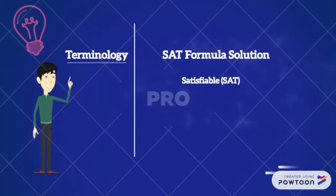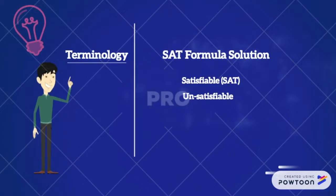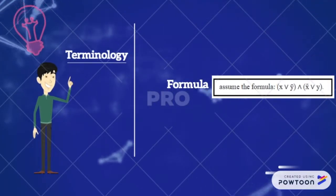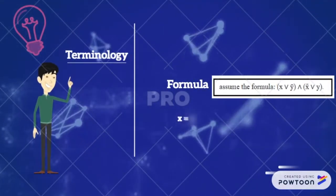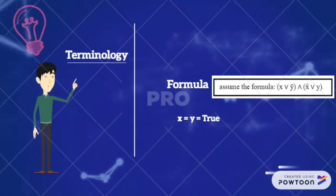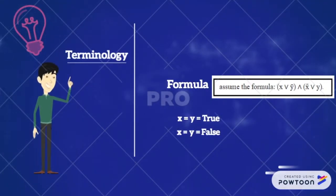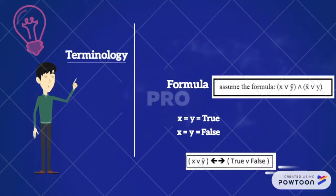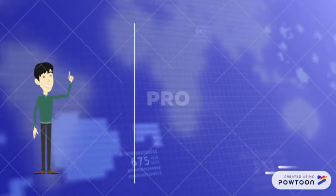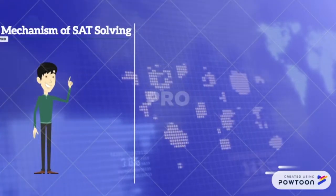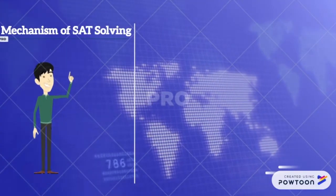A SAT formula solution exists when all clauses of the formula are satisfied. Formulas with solutions are called satisfiable, or SAT, and unsatisfiable otherwise. For instance, consider a logical expression with x OR NOT y combined with other clauses. This formula is satisfiable when x equals true and y equals true, or x equals false and y equals false, because x OR NOT y would evaluate to true, satisfying the constraint of having at least one true literal.